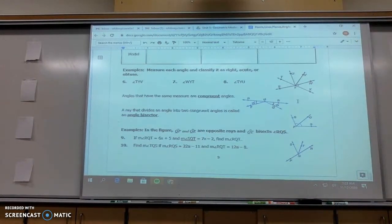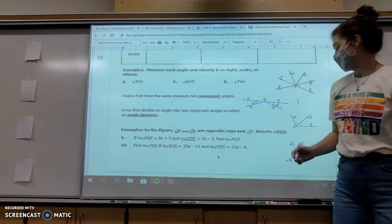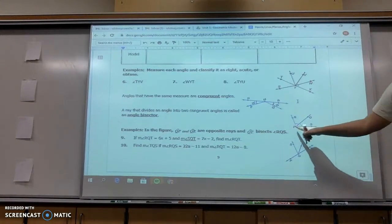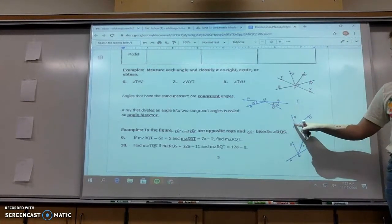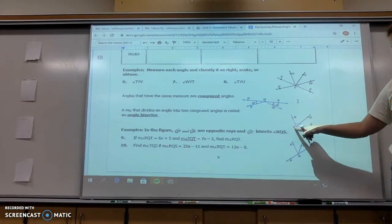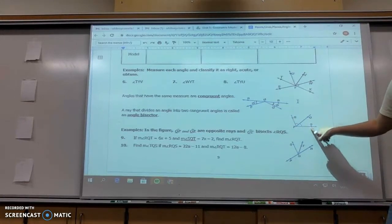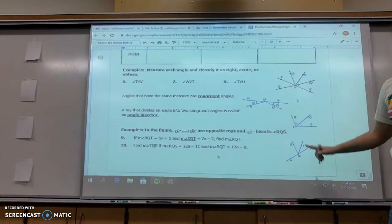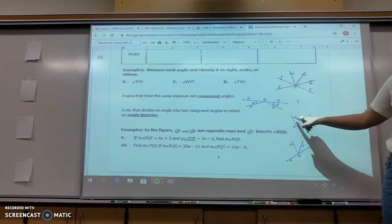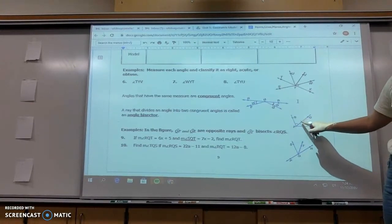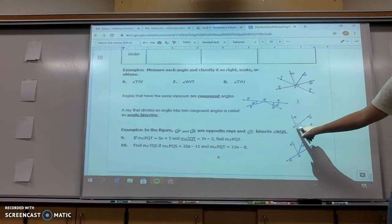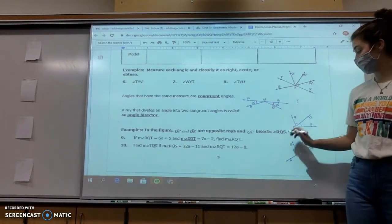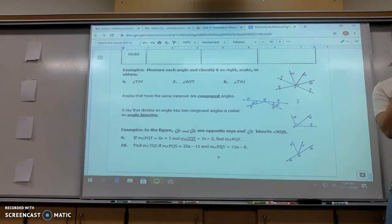If an angle is divided into two congruent angles, they're called an angle bisector. So right here, you can see that angle RPS has a ray, PQ, coming right in the middle of that. PQ is an angle bisector because angle RPQ and angle QPS are the same. So PQ is my angle bisector.